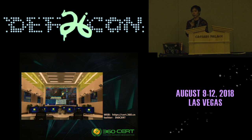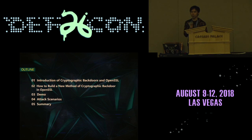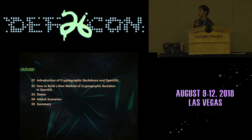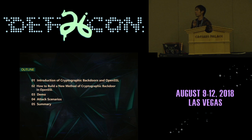And this is a picture of our team's office. Let's look at the outline of this topic. In the first part, I'll introduce cryptographic backdoors and something about the architecture of the OpenSSL source code. In the second part, I'll show you how to build a new method of cryptographic backdoor in OpenSSL. And then I'll show you two demos.